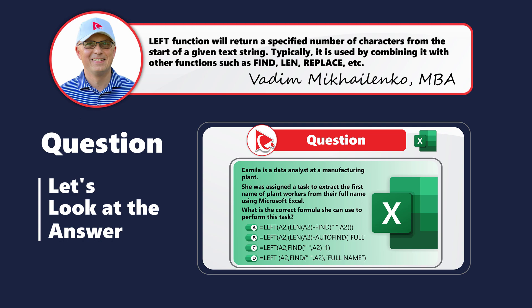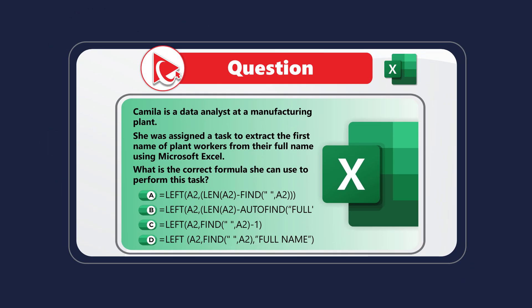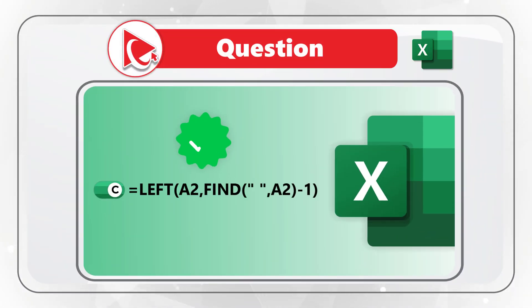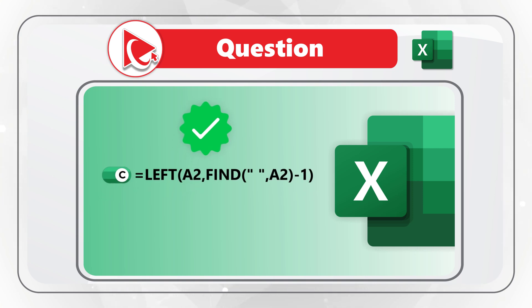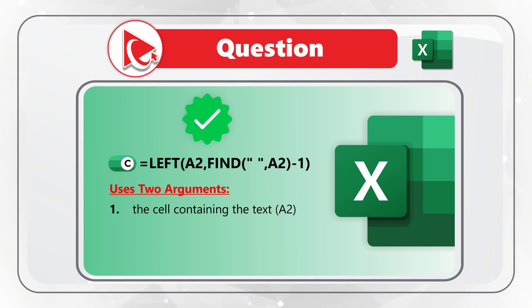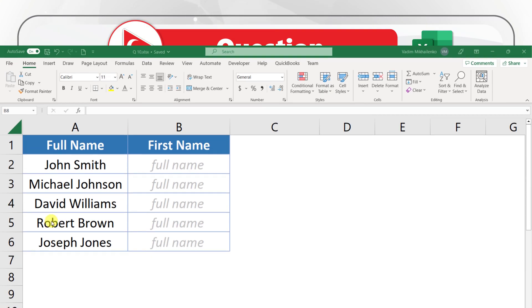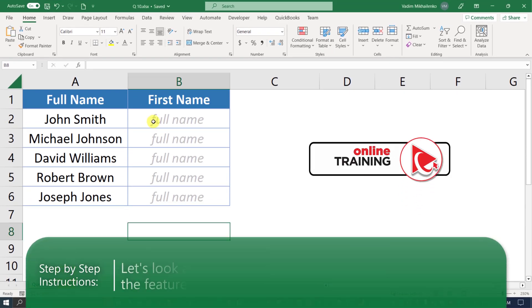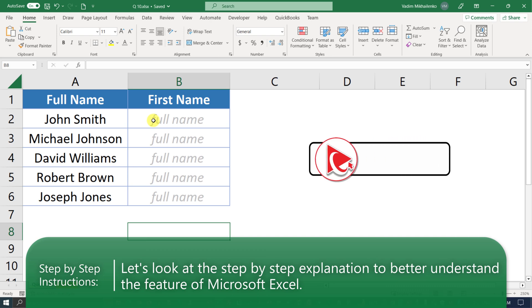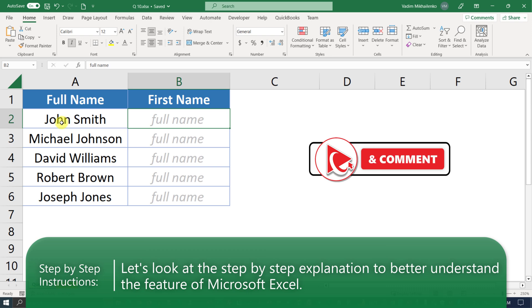The correct choice is C. It uses the LEFT function and provides two arguments. The first argument is the value of cell A2, and the second argument is the FIND function, which supplies a space as well as argument A2 minus 1. Let's jump to Microsoft Excel to simulate this scenario. In the question section, we need to extract the first name, and 'John Smith' has a space between John and Smith.